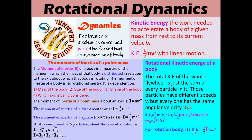For a rotating body the kinetic energy is one-half times I times ω², where m₁r₁² represents the moment of inertia of a point mass, which equals mr². So the kinetic energy of a rotating body is one-half times I times ω².